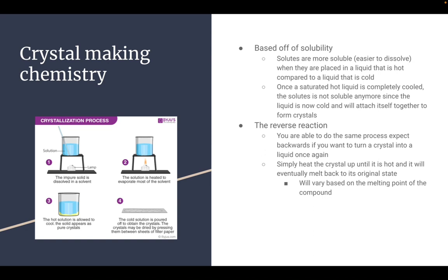So the reverse reaction. You are able to do the same process except backwards if you want to turn a crystal into a liquid once again. Simply heat the crystal up until it is hot and it will eventually melt back into its original state. This will vary based on the melting point of the compound.